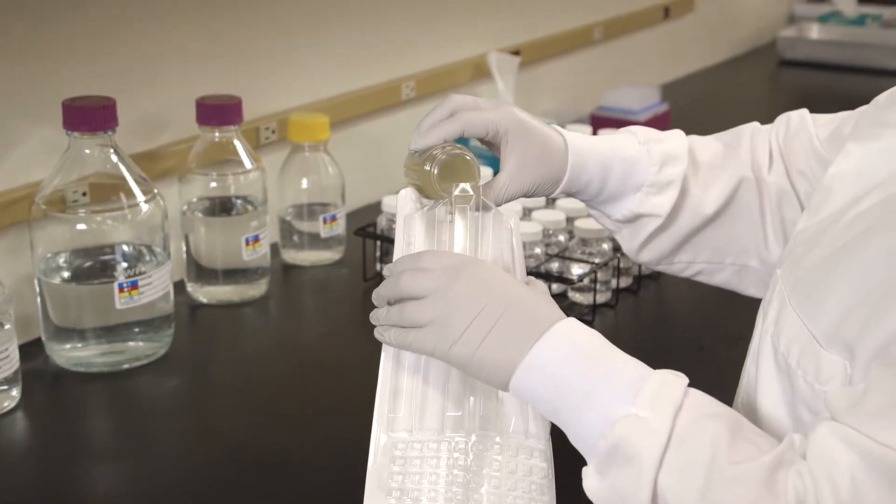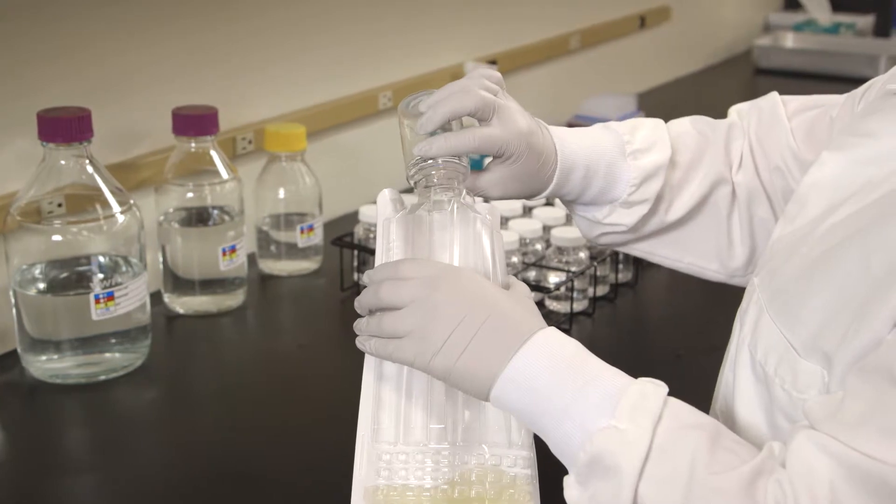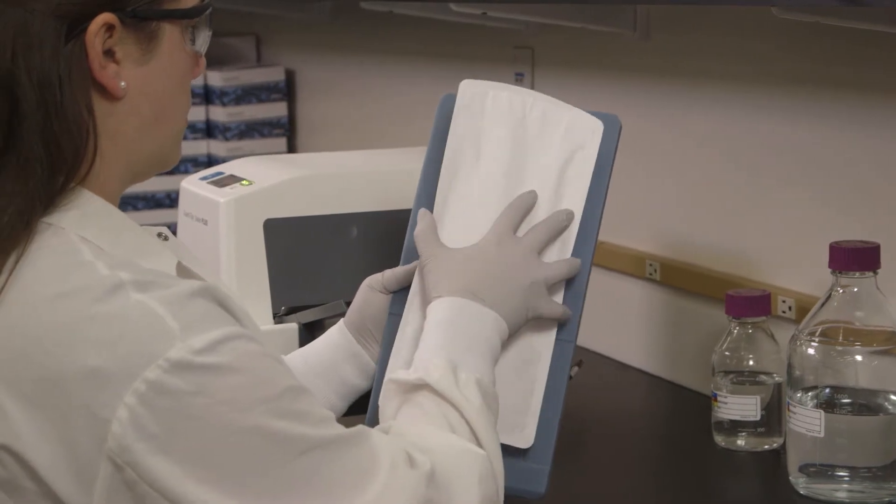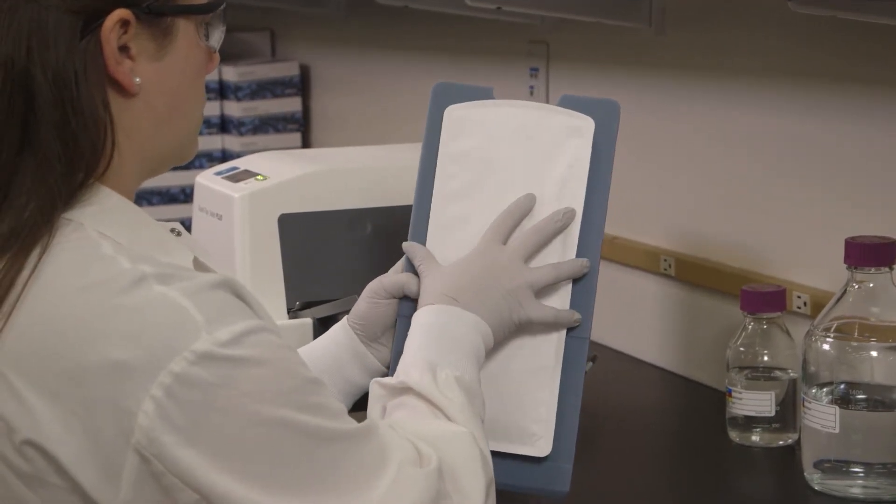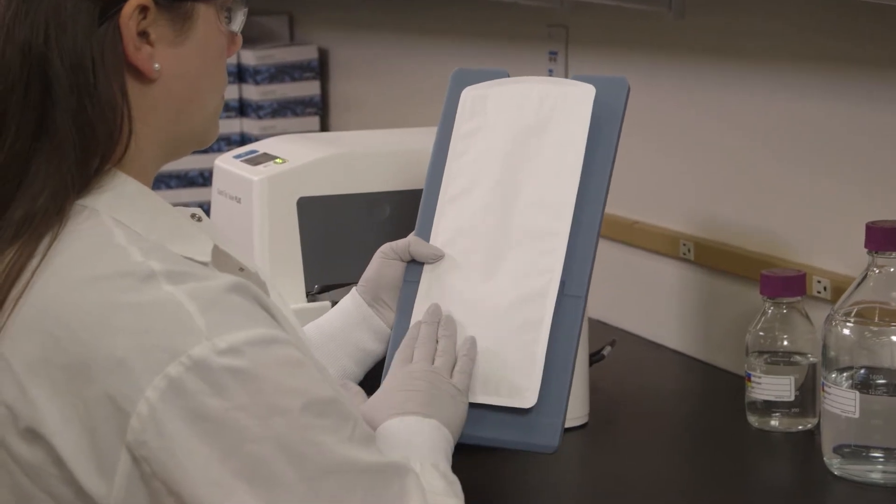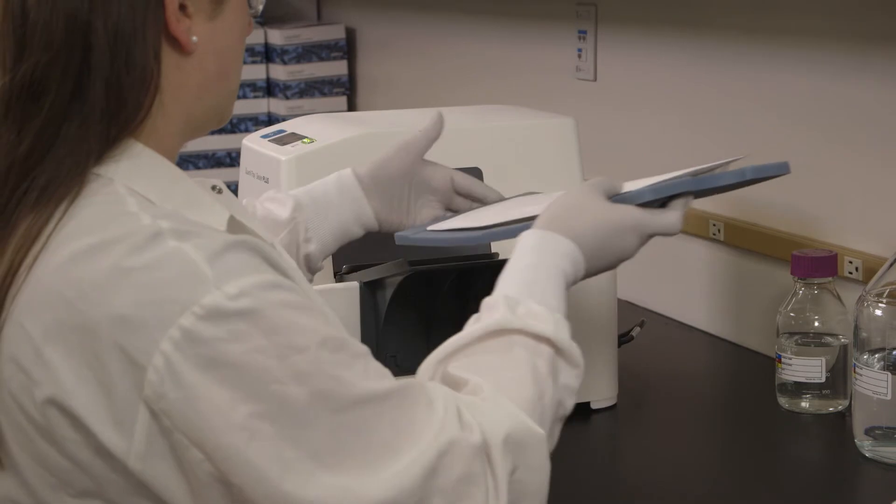Aseptically pour the sample mixture into the tray. Tap or flick the tray to remove air bubbles. Immediately place the filled tray on the rubber insert, making sure each well fits its corresponding hole. Push the insert with tray into the sealer until the sealer grabs the tray and pulls it into the slot.